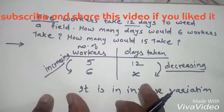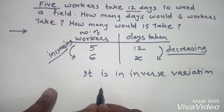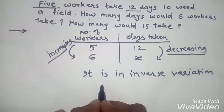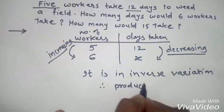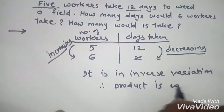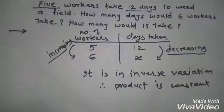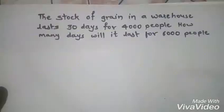Whenever two quantities are in inverse variation, always remember that their product is constant. So the product of those quantities will be constant.